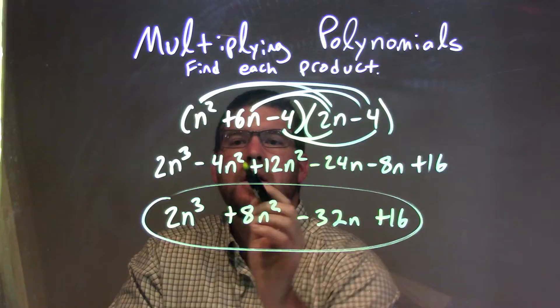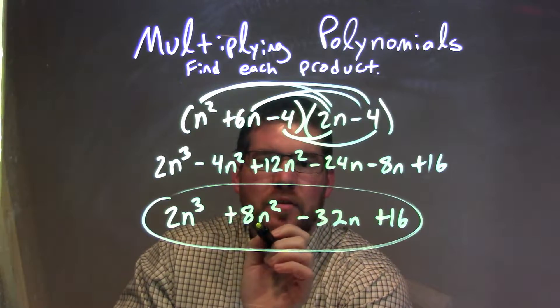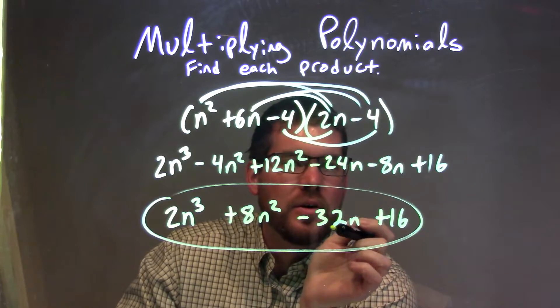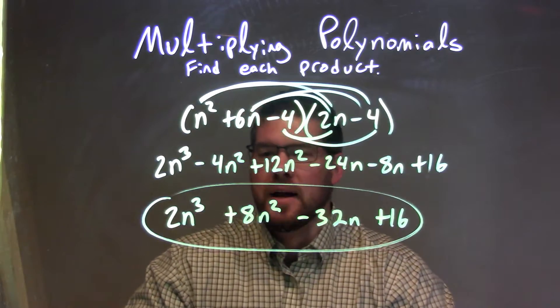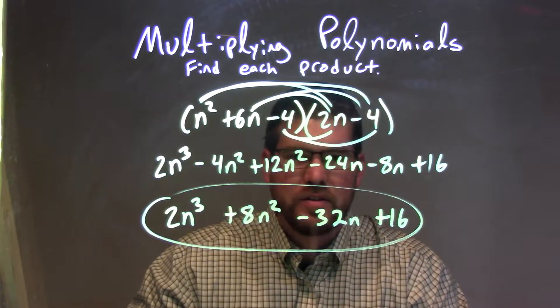We combine our like terms. Minus 4n squared plus 12n squared, which is one of our like terms, was a positive 8n squared. And minus 24n minus 8n was minus 32n. So now our final answer here is 2n to the third plus 8n squared minus 32n plus 16.